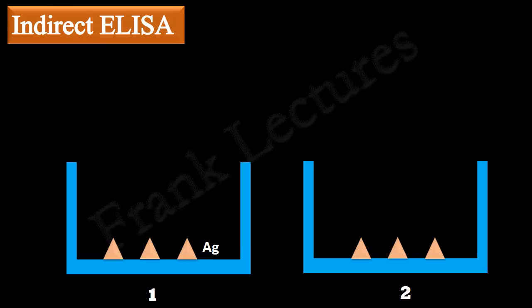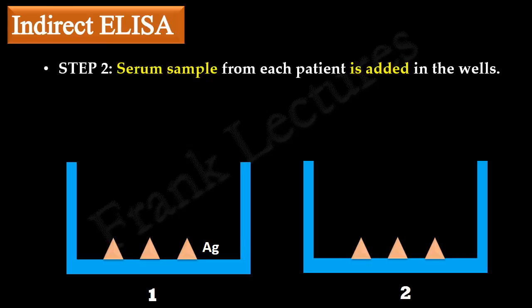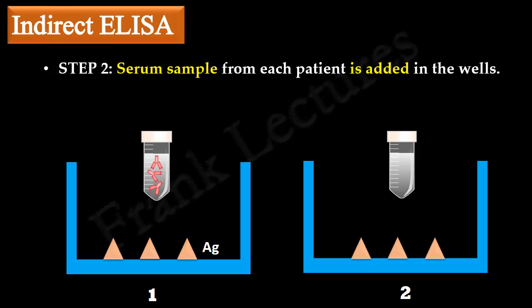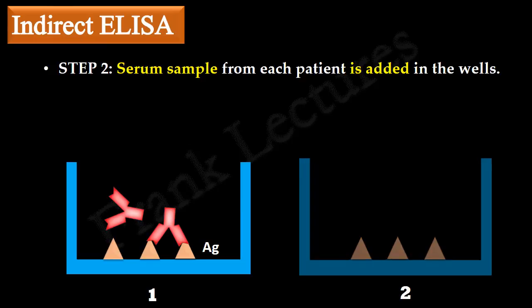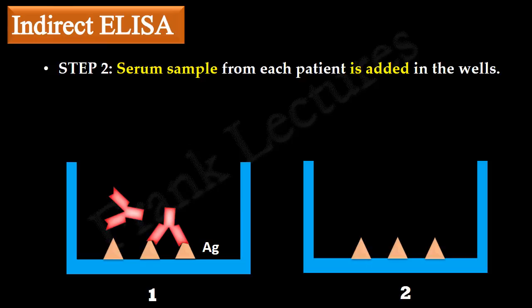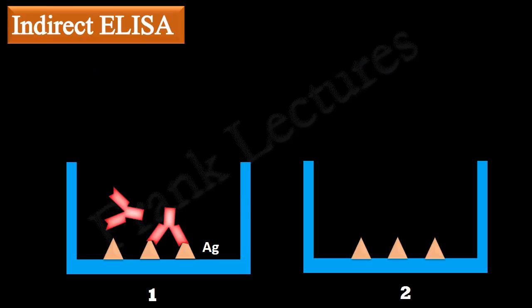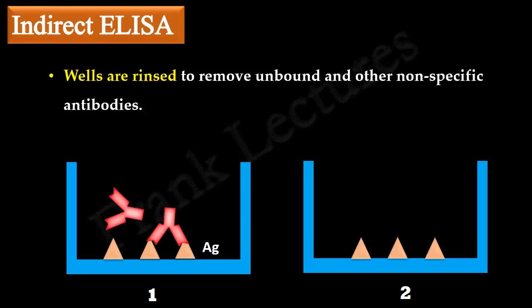In the second step, serum samples from each patient are added in their respective wells. Since antibody of interest is present in the serum sample of patient 1, these antibodies will bind to the specific antigen present in the well. But no antigen-antibody binding will take place in well 2 because antibodies specific to the antigen are absent in serum sample of patient 2. Also, other nonspecific antibodies present in these serum samples will remain unbound. Rinsing is done again to remove unbound and nonspecific antibodies from the well.